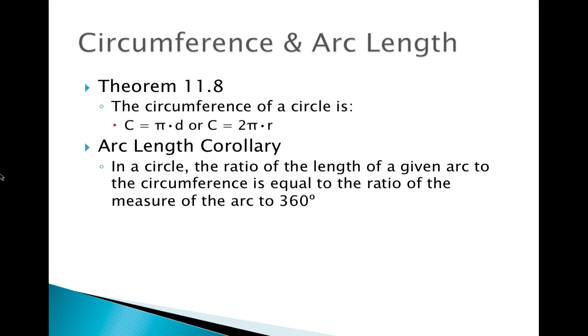Now we have a corollary, and remember corollaries are things that are easily proved from a previous theorem, or they're kind of like a mini-theorem. Our arc length corollary states that in a circle, the ratio of the length of a given arc to the circumference is equal to the ratio of the measure of the arc to 360 degrees. So we have an equation for that.